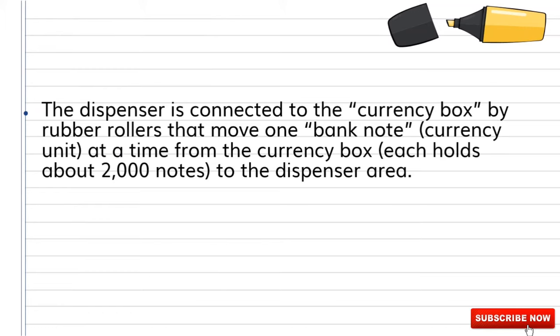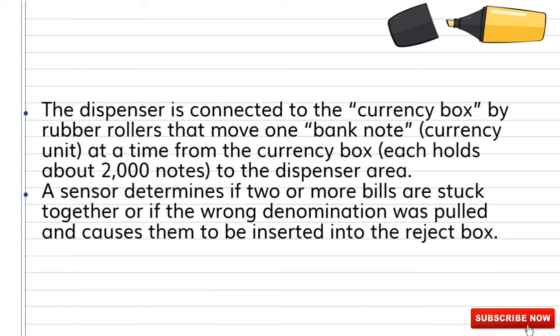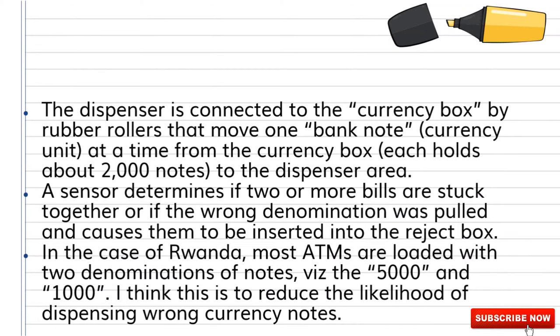The dispenser is connected to the currency box by rollers that move one banknote at a time from the currency box, which holds about two thousand notes, to the dispenser area. A sensor determines if two or more bills are stuck together or if the wrong denomination was pulled, causing them to be inserted into a reject box.